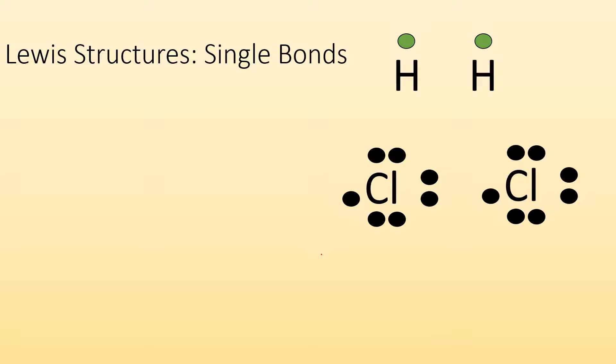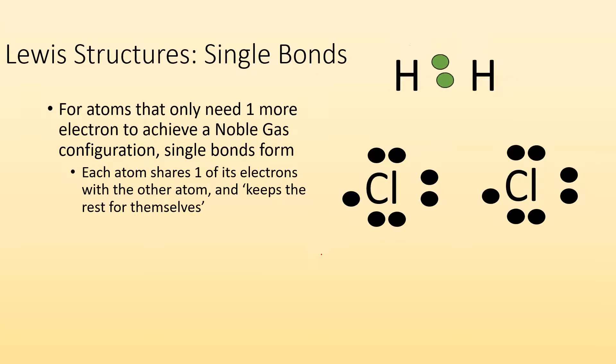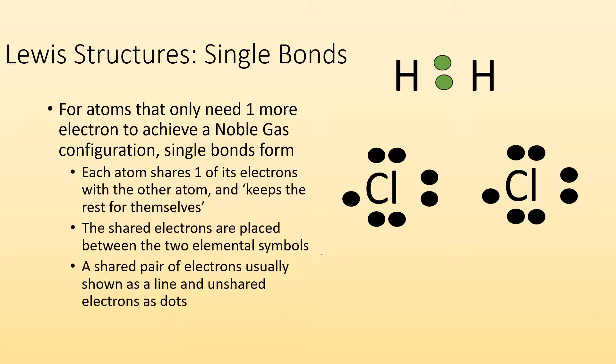So Lewis structures, how do we draw these? How do we represent these bonds? Well, first let's start with single bonds. So for atoms that only need one more electron to achieve a noble gas configuration, we get single bonds. Each atom shares one of its electrons with the other atom and keeps the rest for themselves. So for hydrogen, they only have one. They each kick in the one electron and they share them with each other. The shared electrons are placed between the two elemental symbols. And sometimes instead of drawing dots between them, you show a line. So for hydrogen, it would just be hydrogen dash hydrogen. And these two electrons are represented by that single line.